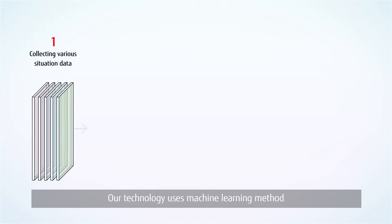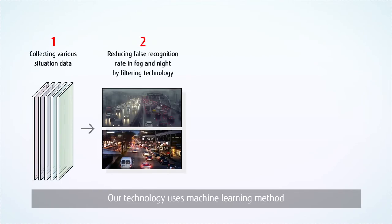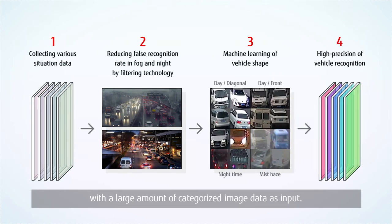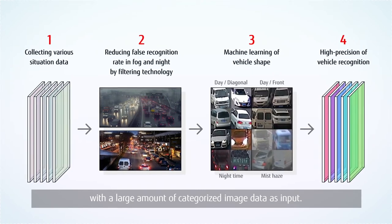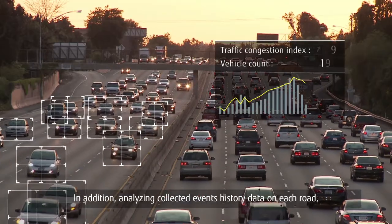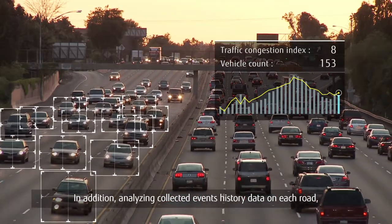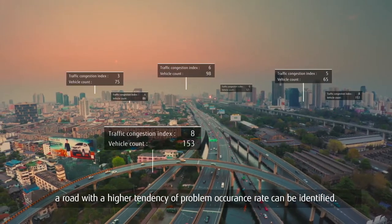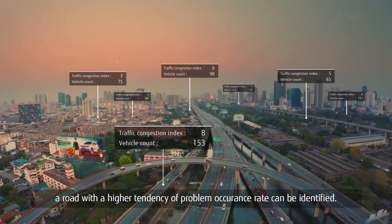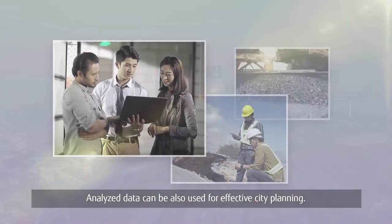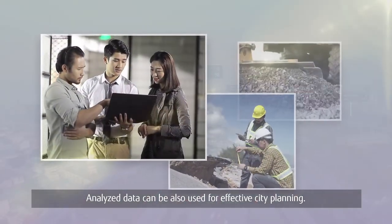Our technology uses a machine learning method with a large amount of categorized image data as input. In addition, by analyzing collected event history data on each road, a road with a higher tendency of problem occurrence can be identified. This analyzed data can also be used for effective city planning.